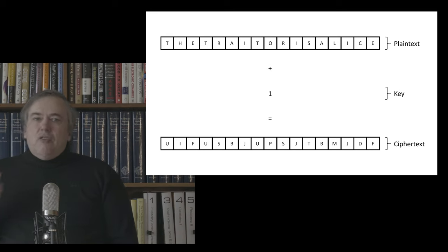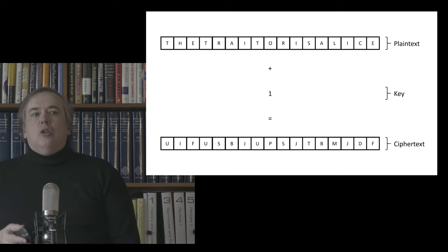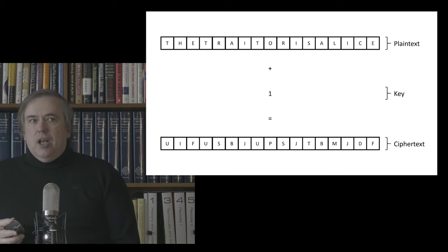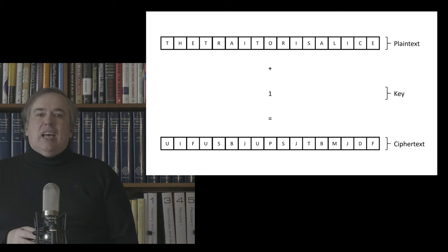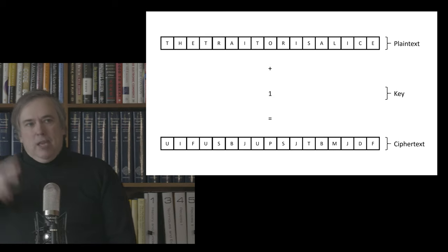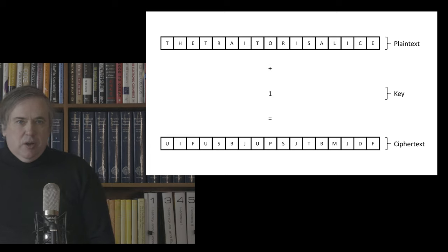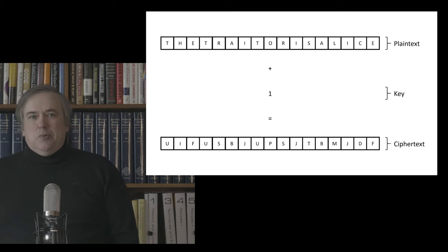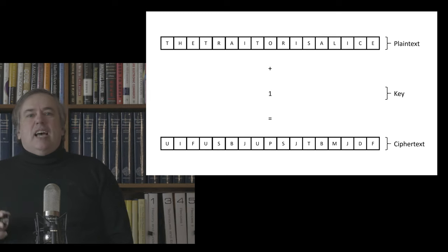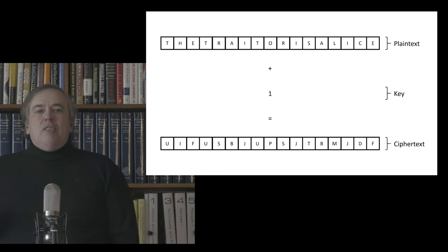This didn't stop a Mafia boss called Bernardo Provenzano from trying to use a Caesar cipher to hide his activities from the authorities. In his cipher, A became 4, B became 5, and so on. Two thousand years after Julius Caesar, Italians were still using Caesar's cipher.